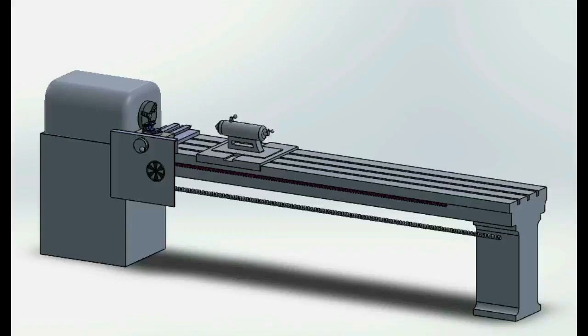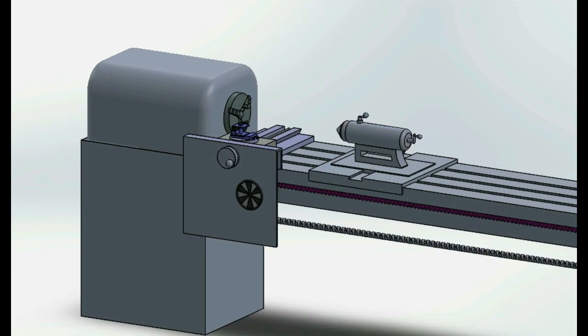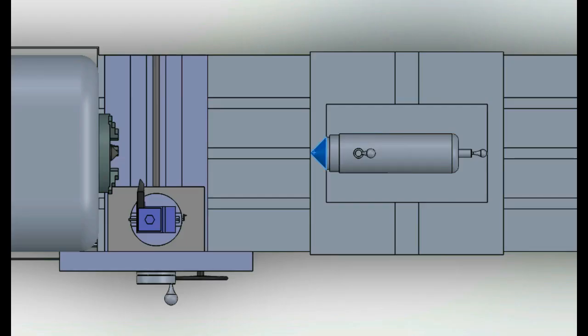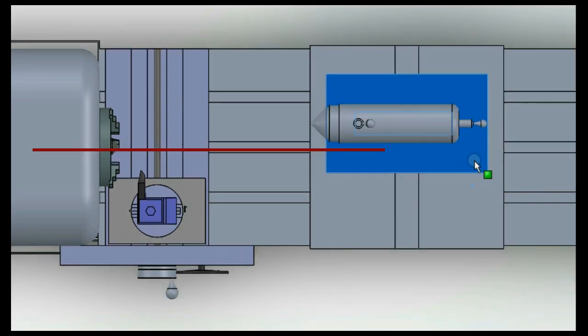The tailstock is clamped over the lathe bed opposite to the headstock. In normal position the dead center lies in the axis of rotation. However, the tailstock can be set off the axis by using a setover screw.